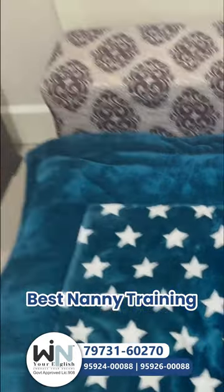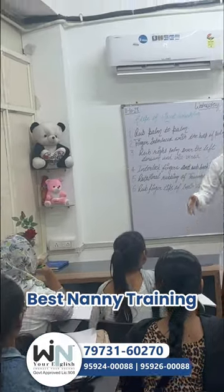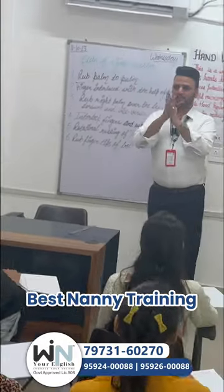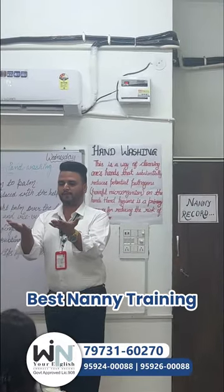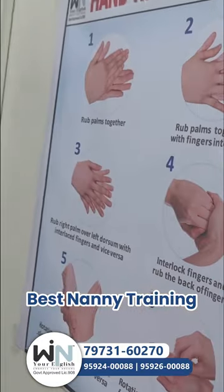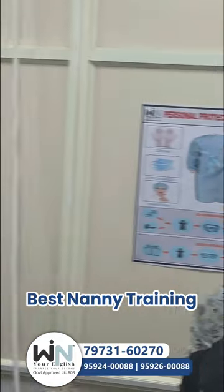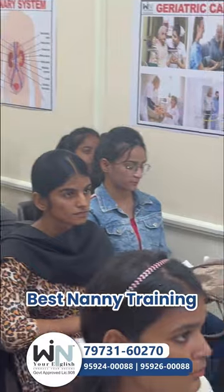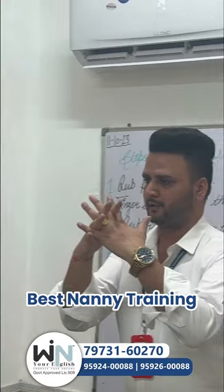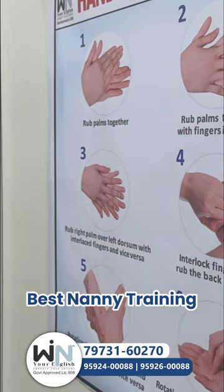There are several steps of hand washing. First step: rub palm to palm. These are our palms — first rub them together. Second step: fingers interlaced with the help of the palm. Interlace your fingers together.